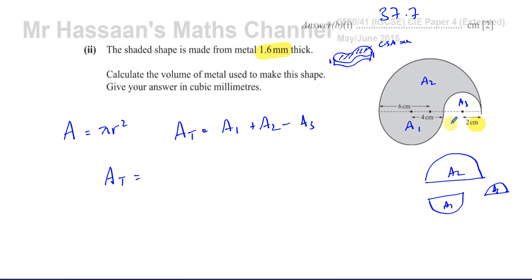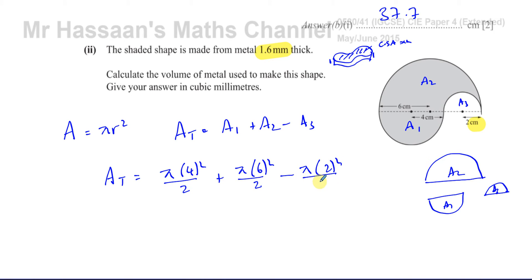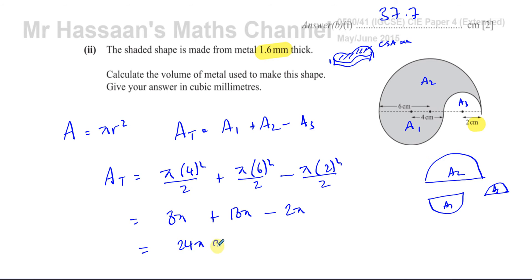So the total area is: (π times 4²) divided by 2, plus (π times 6²) divided by 2, minus (π times 2²) divided by 2. That gives 16π/2, which is 8π, plus 36π/2, which is 18π, minus 4π/2, which is 2π. That comes to 26π minus 2π, giving 24π centimetres squared. That's the cross-sectional area.